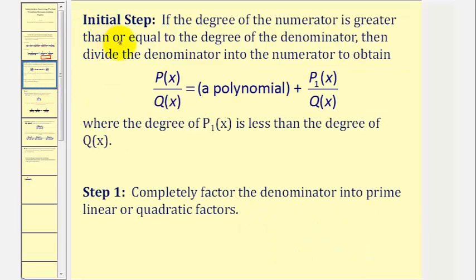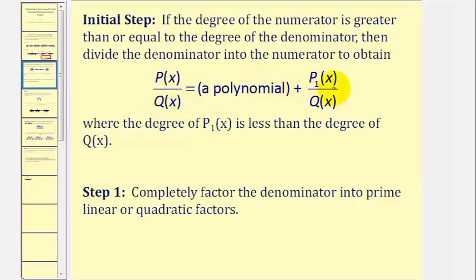Before we perform partial fraction decomposition, as an initial step, if the degree of the numerator is greater than or equal to the degree of the denominator, we must divide the denominator into the numerator to obtain a polynomial plus a rational expression, where the degree of p-sub-one is less than the degree of q, our denominator. If that condition holds, we perform long division.